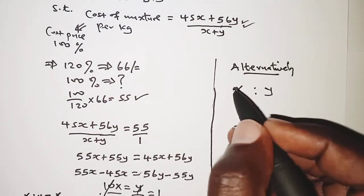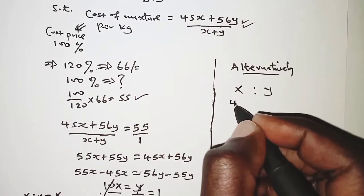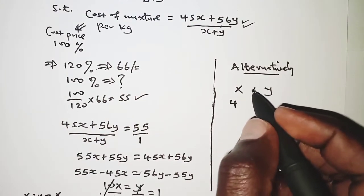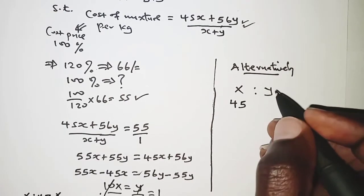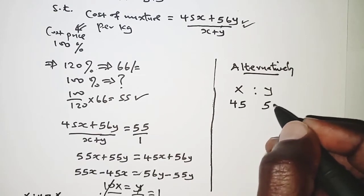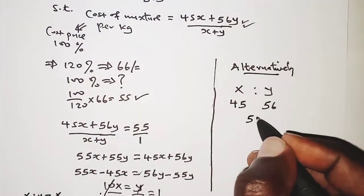So the cost per kilogram for maize was 45 shillings per kilogram, and for millet it was 56 shillings per kilogram, and then the cost of the mixture is 55.